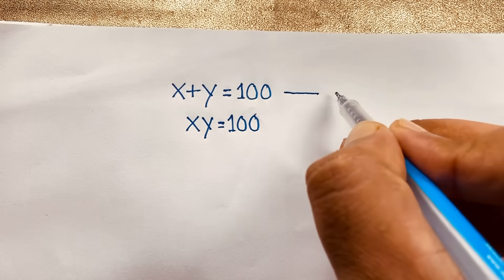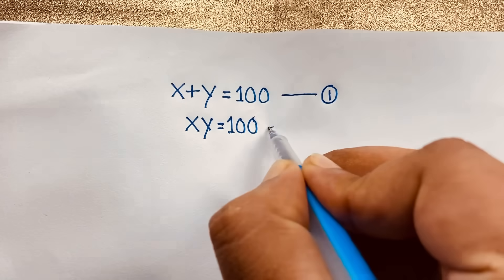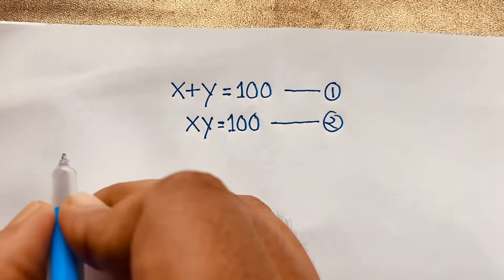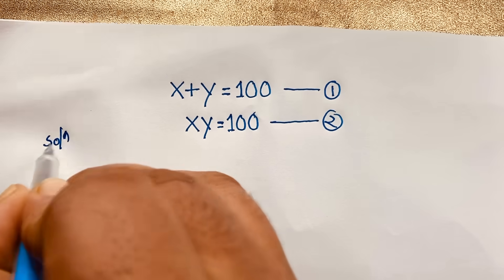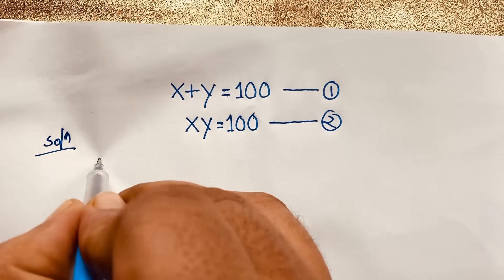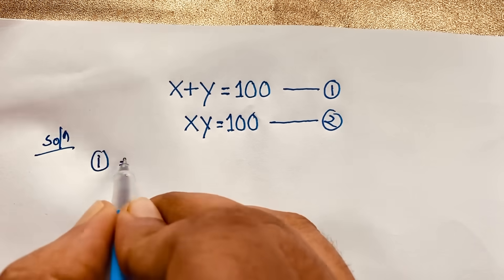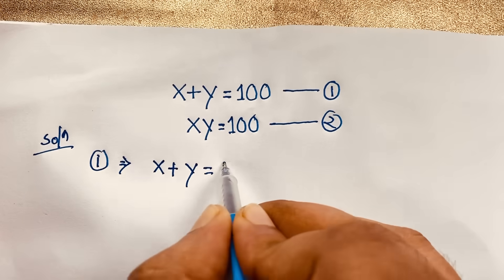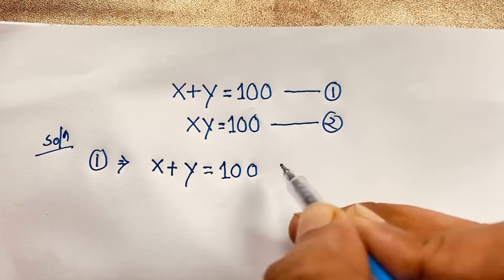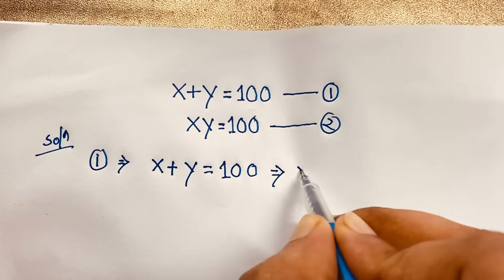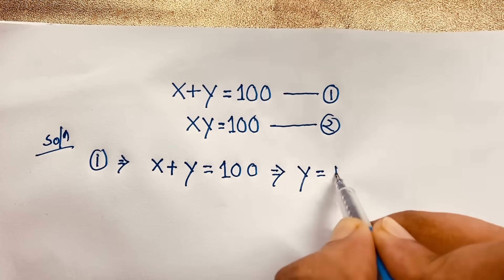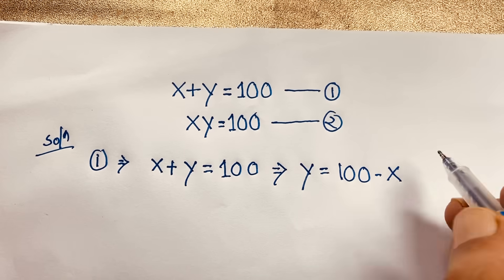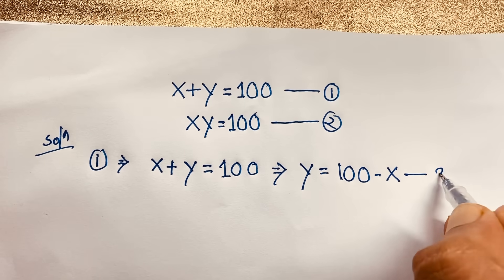First of all, you can see this is our first equation and this is our second equation. Now, I take our first equation which is x plus y is equal to 100. Here, y is equal to 100 minus x — I just move x to this side, it will be negative x. This is our third equation.